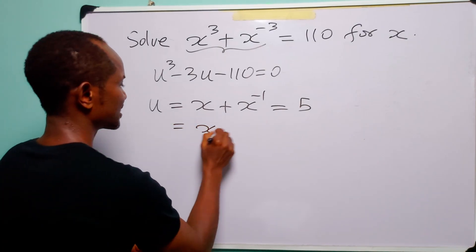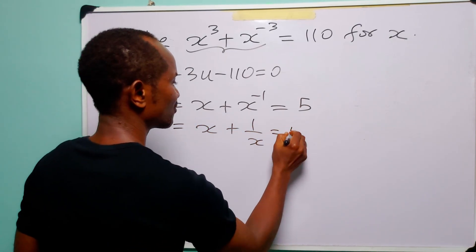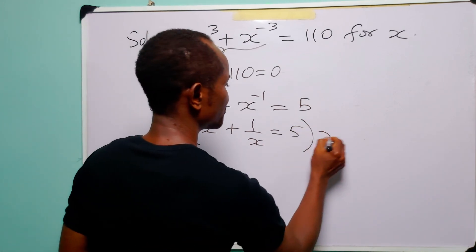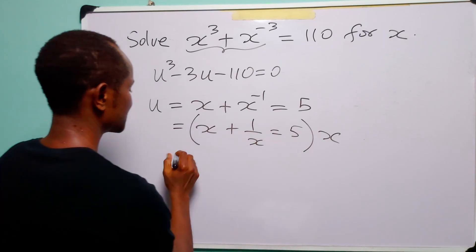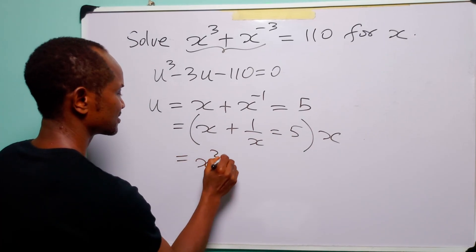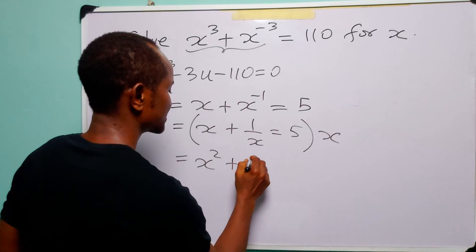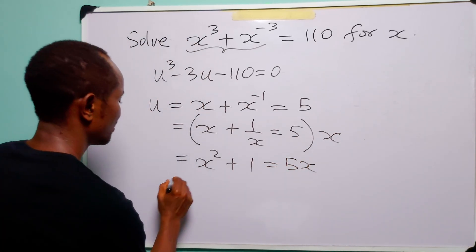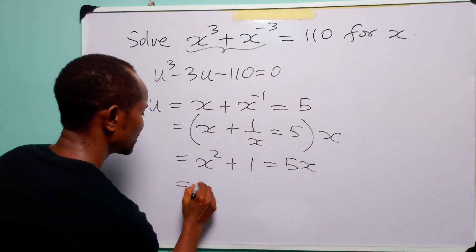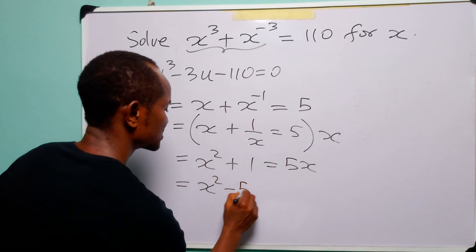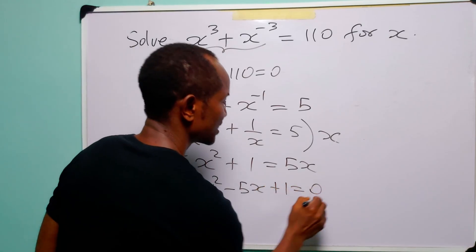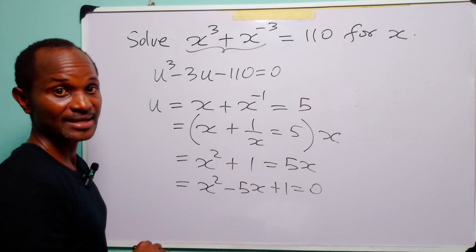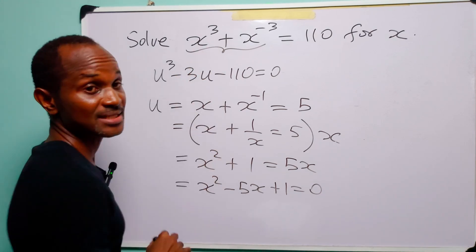Writing x + 1/x = 5 and multiplying through by x gives x² + 1 = 5x. Rearranging, we get x² − 5x + 1 = 0. We now solve this quadratic equation for x.